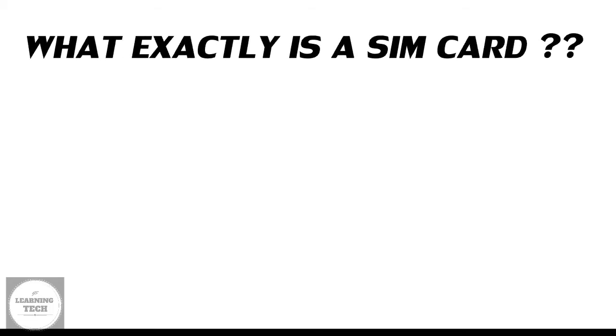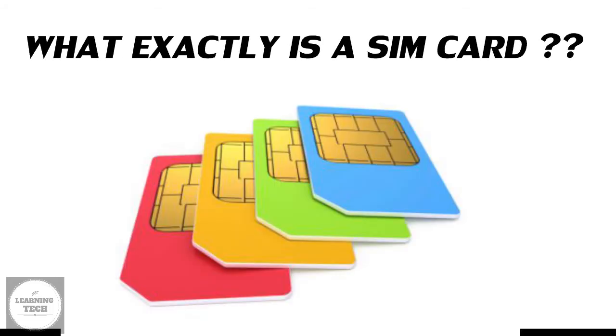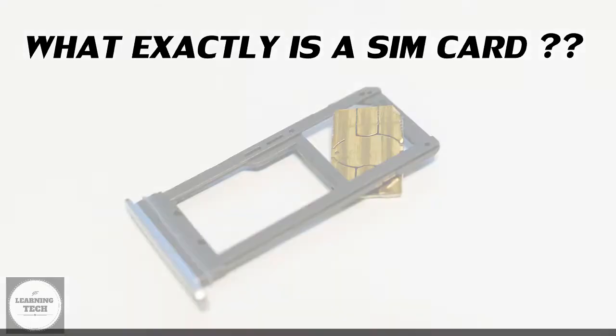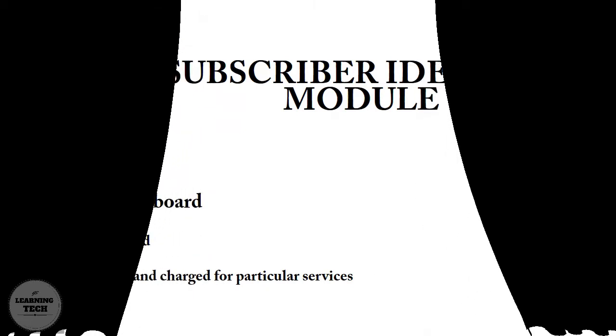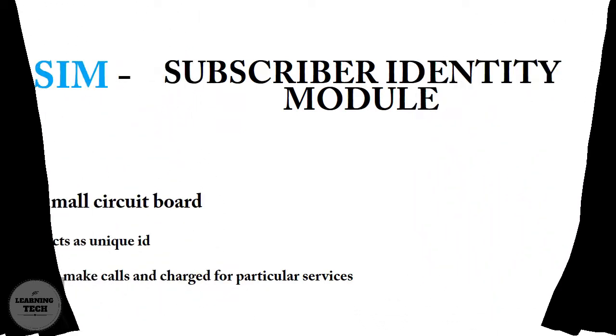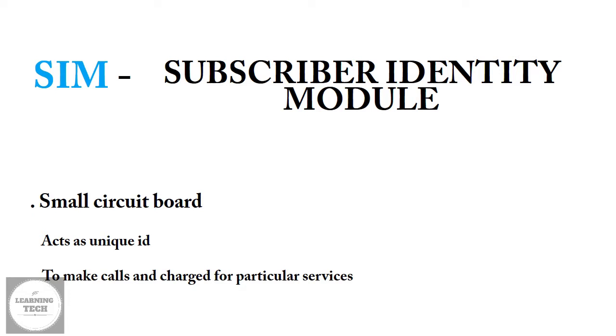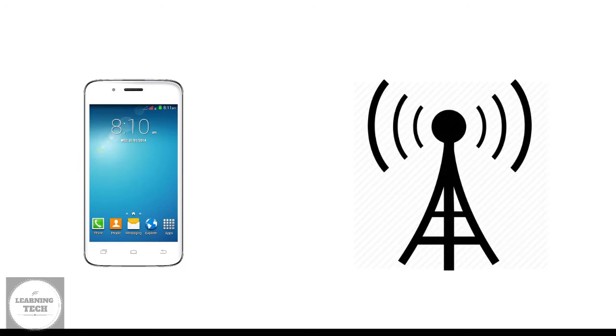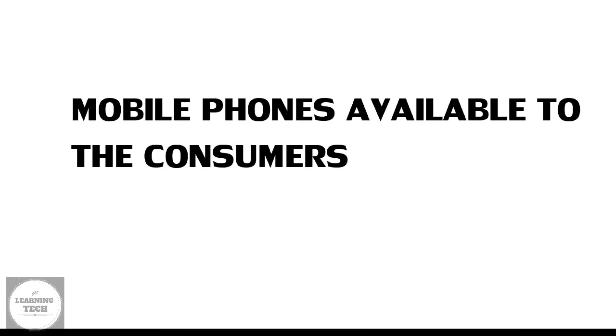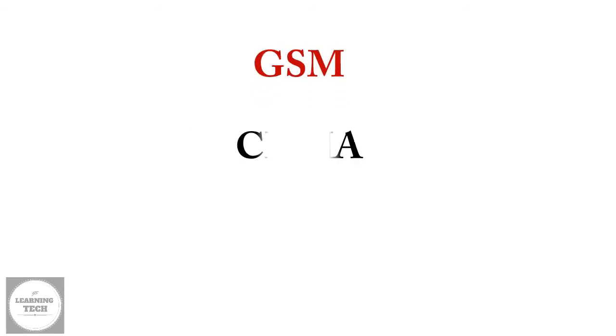What exactly is a SIM card? You know the little piece of plastic found in the metal pull-out on your phone? The short answer is: it's a Subscriber Identity Module. A small circuit board in most modern phones used to communicate with your carrier. There are two types of mobile phones available to consumers: GSM and CDMA.